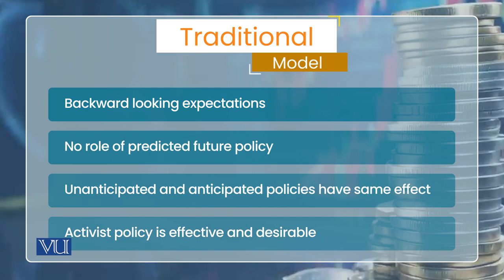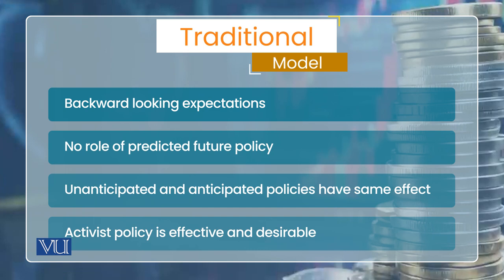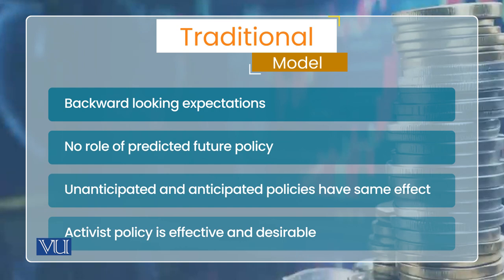چونکہ traditional model میں expectations quickly revise نہیں ہوتیں اور لوگ backward-looking ہوتے ہیں، cost of production ایک دم سے change نہیں ہوتا۔ تو traditional model میں policy fully effective ہوگی۔ اس کا مطلب ہے policy maker جس قسم کے بھی shocks — expansionary یا contractionary — economy کو hit کریں، ان کا response دے سکتا ہے کیونکہ policy effective ہے۔